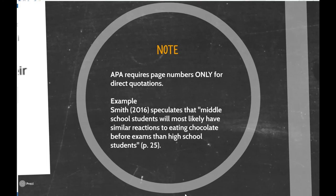Just a quick note about page numbers for citations. In APA, you are only required to use page numbers when you are actually quoting something verbatim — using the exact same phrasing from the original. Put it in quotation marks and add a page number. For example: 'Smith (2016) speculates that [quote],' and then in parentheses you add the page number, such as p. 25.